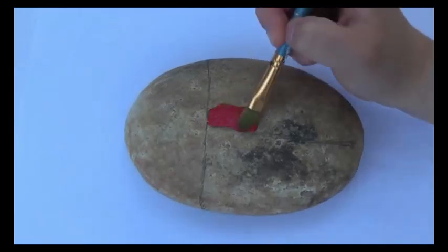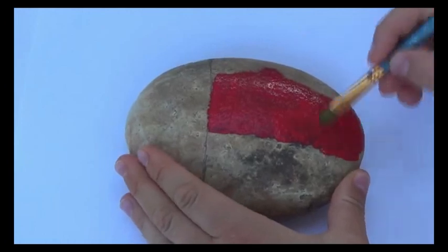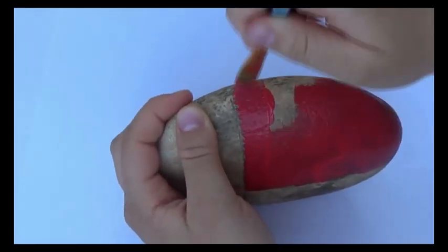Next, I'm using red acrylic paint to paint the wings. You can use any color, and you can use nail polish instead of paint. I just chose to do paint.